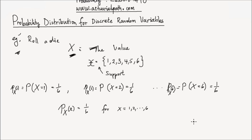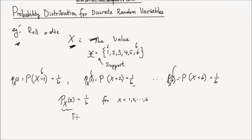We call this function that takes a value from the support — so let's say 1, put it in, and you get 1 over 6. You take 2, put it in that function, you get 1 over 6. You take any value, maybe 6, put it in this function, you get 1 over 6. And we call this function the probability mass function, or the PMF.